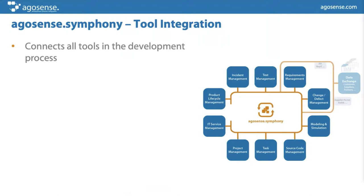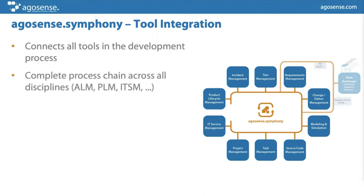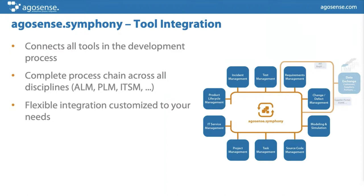Regarding tool integration: we connect all the different tools behind disciplines like requirements management, change and defect management, modeling, and so on. We connect these tools to our platform and give them the ability to speak with each other. For customers focusing on a best-of-breed strategy, they can bring different tools together into a complete process chain across all disciplines. One important thing is that integration is not just attribute mapping — there's also a lot of process and workflow involved, which is one of the biggest strengths of our platform.